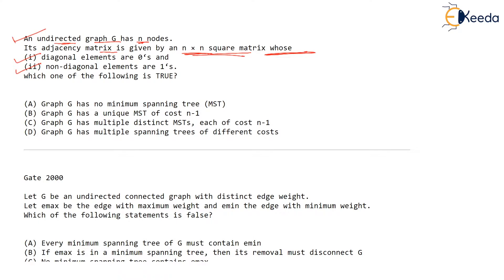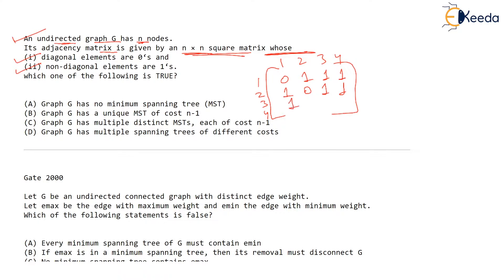What that means is, if you have a four by four matrix, that means you have four vertices. All the non-diagonal elements are one, but except diagonal elements — diagonal elements are zero. This means it is a complete graph.